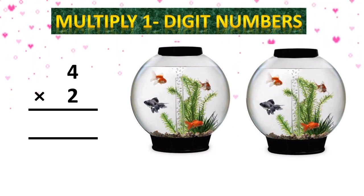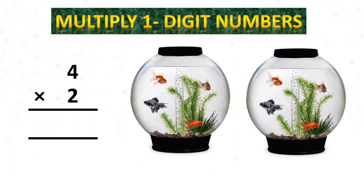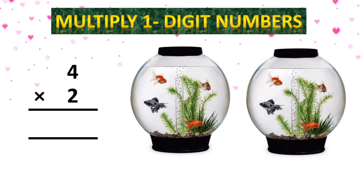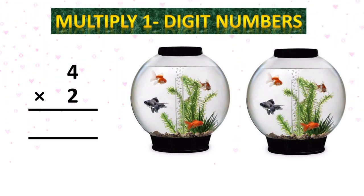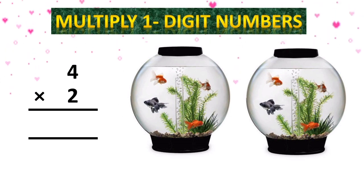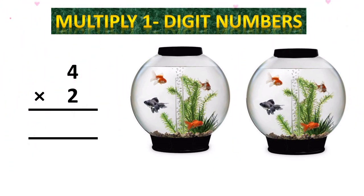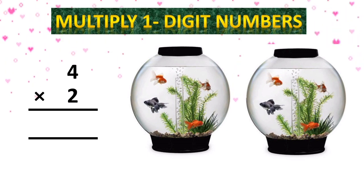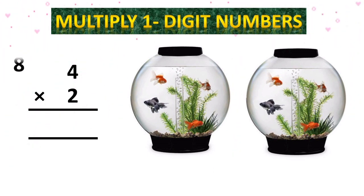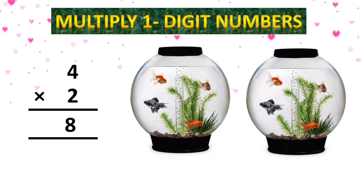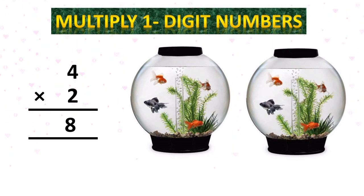Yes, bita, it is your next one. In one aquarium you have 4 fishes. Aapke 1 aquarium mein kya hai? 4 fishes hai, ji. And you have 2 aquariums, so 4 multiply by 2 — 4 ones are 4, 4 twos are 8. So the number of fishes are 8.